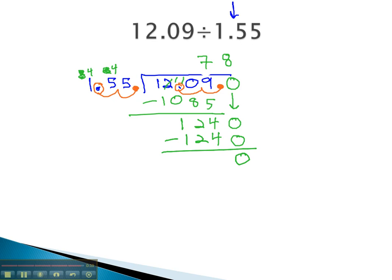Subtract, and we get zero. And finally, we can place the decimal by moving it straight up into our answer. Move the decimal so that we're dividing by a whole number.